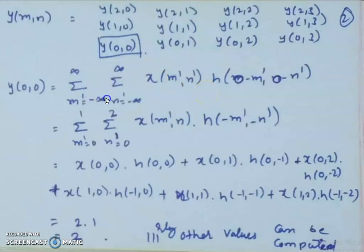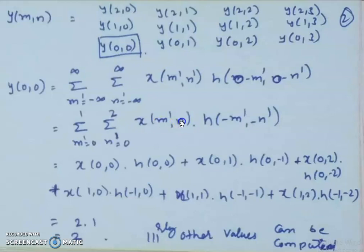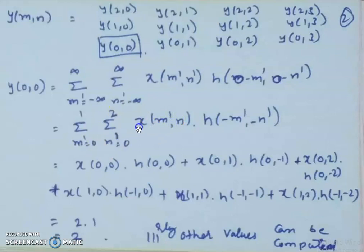After deciding the starting and ending indices, we can compute each element by substituting the corresponding values. For y(0,0), with m=0 and n=0, we get summation over m' from 0 to 1, summation over n' from 0 to 2, of x(m',n') multiplied with h(-m',-n'). The lower and upper limits are replaced with 0 to 1 and 0 to 2 because x(m',n') is non-zero only between these indices; beyond these indices x(m',n') is equal to zero.